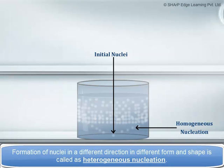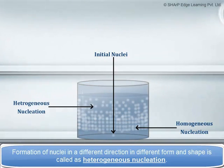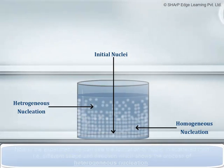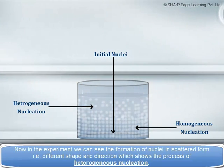Formation of nuclei in different directions in different forms and shapes is called heterogeneous nucleation. Now in the experiment, we can see the formation of nuclei in scattered form, that is, different shapes and directions, which shows the process of heterogeneous nucleation.